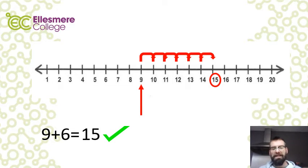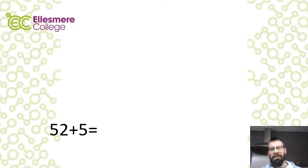Number lines can also be used to answer problems involving much larger numbers. You just have to adapt the number line. This problem, fifty-two plus five, would be impossible to do with a one to ten number line, but we can simply adapt it.